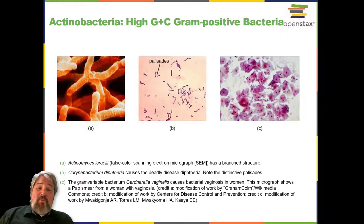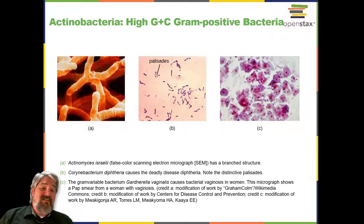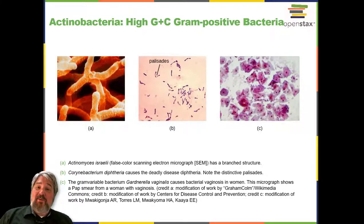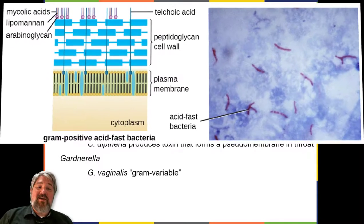The genus Actinomyces is a much-studied representative of actinobacteria. Actinomyces species play an important role in soil ecology, and some species are human pathogens. A number of Actinomyces species inhabit the human mouth and are opportunistic pathogens, causing infectious diseases like periodontitis, inflammation of the gums, and oral abscesses. The species A. israelii is an anaerobe notorious for causing endocarditis, inflammation of the inner lining of the heart.